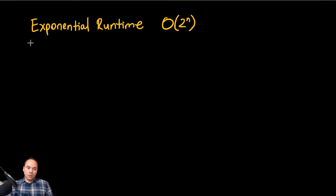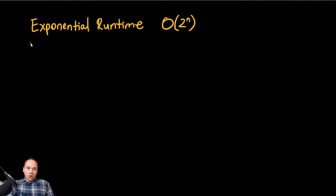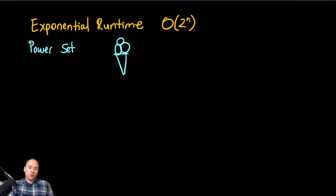In this video we're going to talk about exponential runtime. One example of this is the power set. To explain how the power set works, let's imagine that you are buying ice cream and you're going to add some toppings to it. You can have chocolate, cookies, or whatever you want on top. Let's call these toppings A, B, and C.